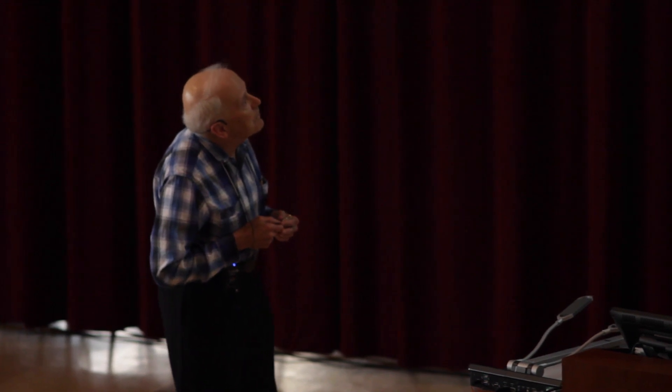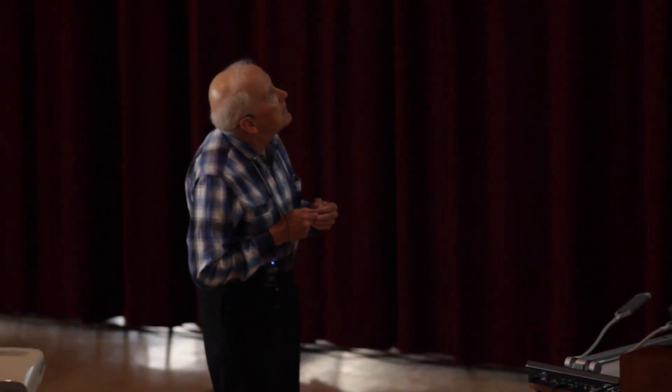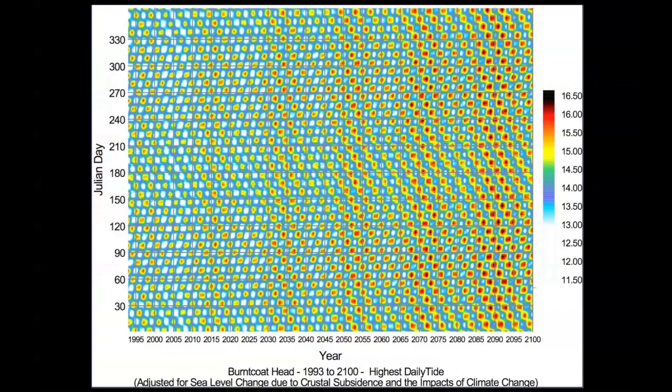The other thing that's a bit scary says this is adjusted for sea level change due to crustal subsidence, which is happening here in Nova Scotia, and the impacts of climate change, and look at the colors. They're getting more intense. That means a higher tide. The provincial government is worried about the dykes. They're working on them at the moment to raise them. Higher tides are coming. One reason, besides climate change and crustal subsidence, is that the deeper the oceans get because of the rising sea level, the closer to resonance becomes the Bay of Fundy, and that makes the Bay of Fundy tides higher. So there's at least three effects going on there.